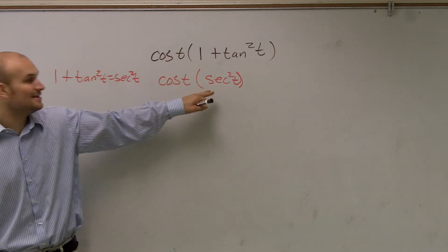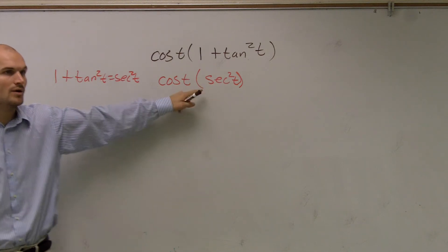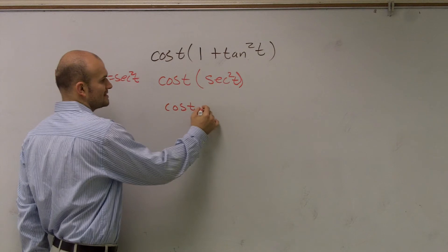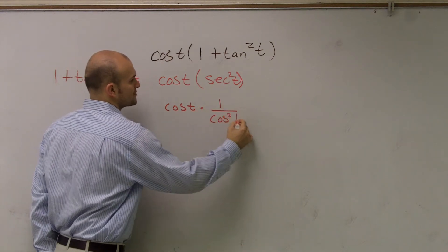So now we have cosine t times secant squared of t. Well, we can write this as cosine t times 1 over cosine squared of t.